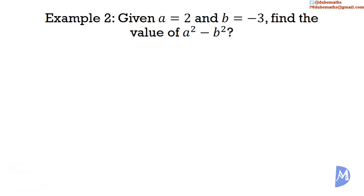A second example. Given a is equal to 2 and b is equal to negative 3, find the value of a squared minus b squared. Wherever we see a, we substitute with 2. Wherever we see b, we substitute with negative 3. So we get 2 squared subtract negative 3 squared.